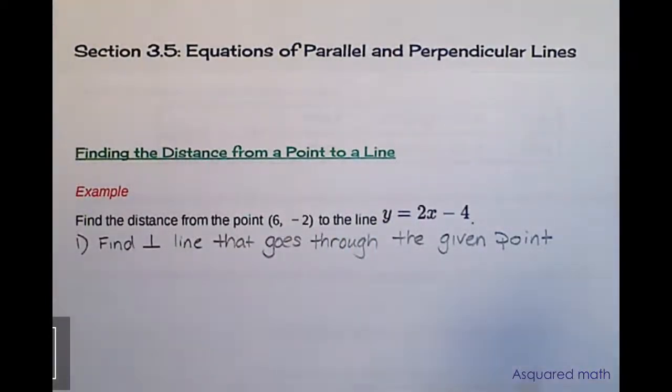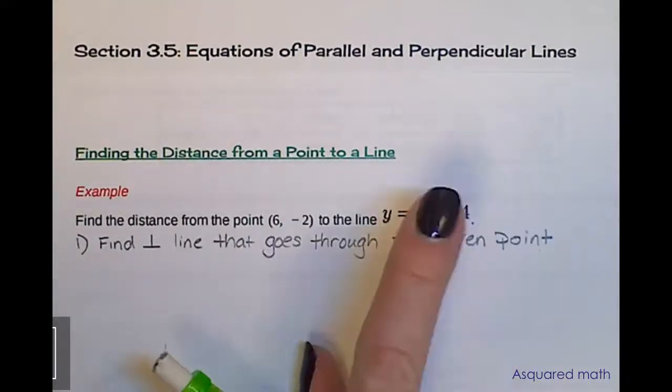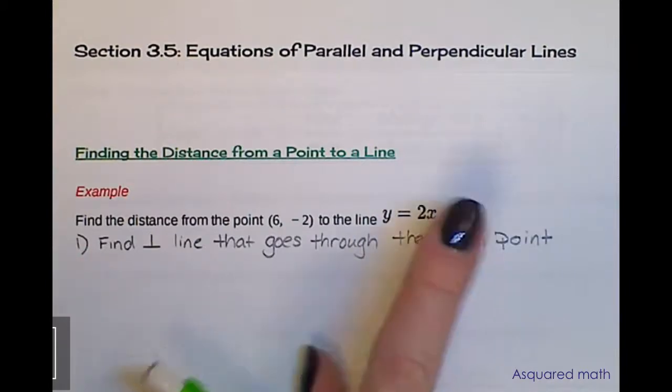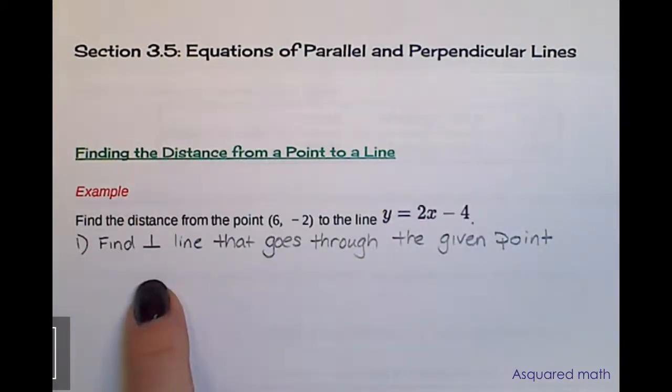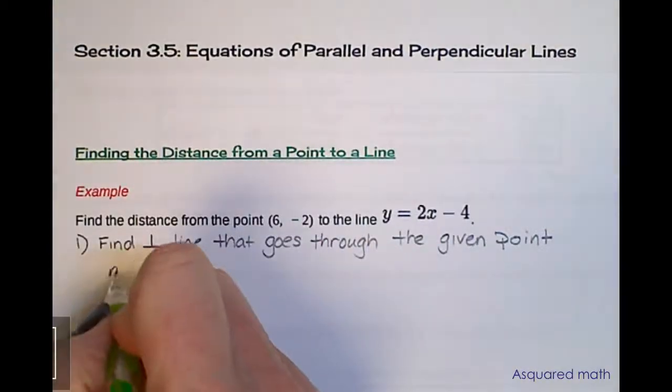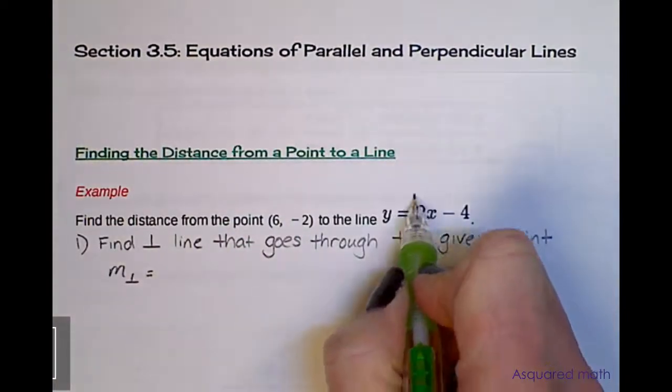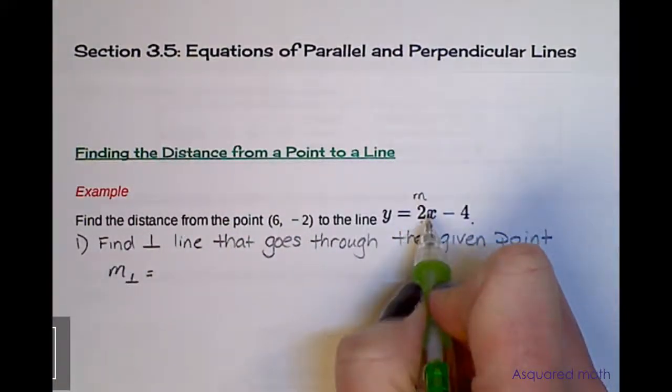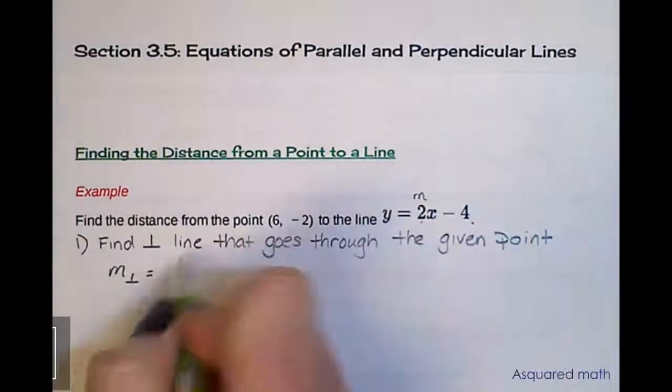The first thing we need to do is find the perpendicular line that goes through the given point. If you recall, to find the perpendicular we have to take the slope that is the opposite reciprocal. So the slope is 2, and it's positive, so our perpendicular is negative one-half.